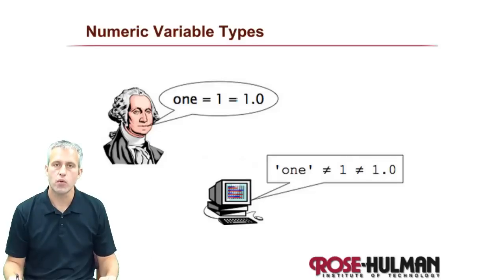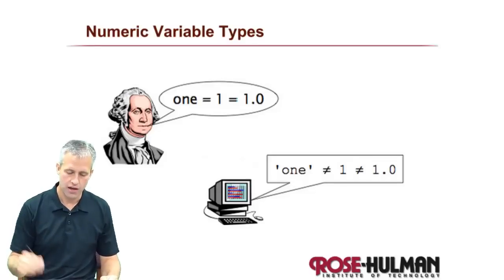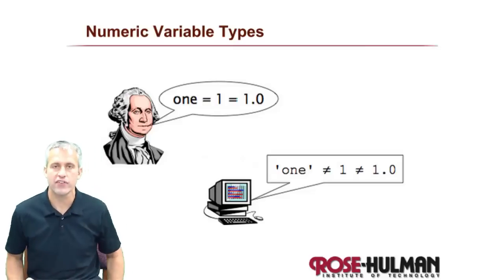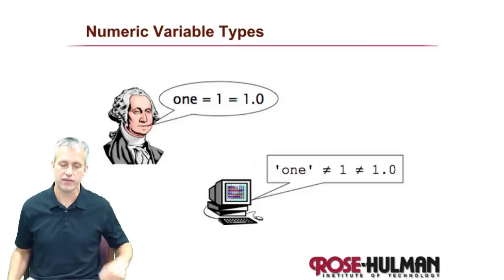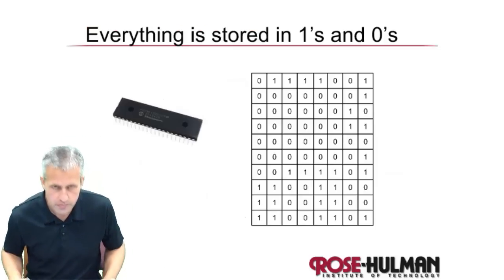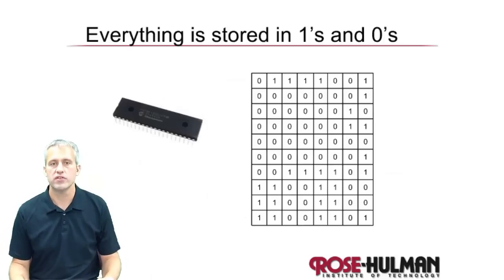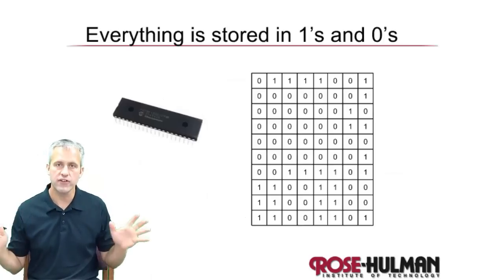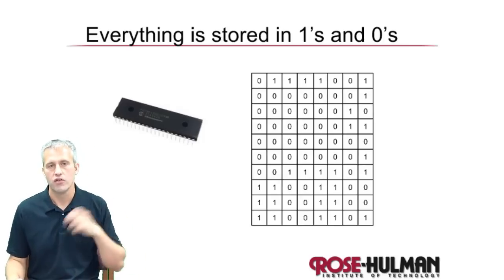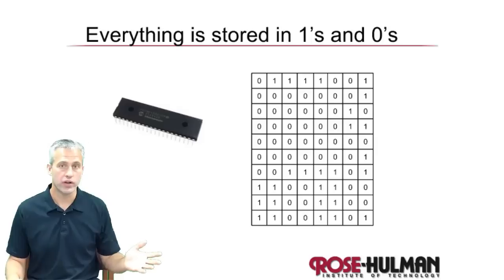Welcome back. This time we're going to talk about some variable types. An important thing you need to know is that everything is stored in ones and zeros. This is true on the PIC microcontrollers and true on any computer you use. Everything goes in as ones and zeros.